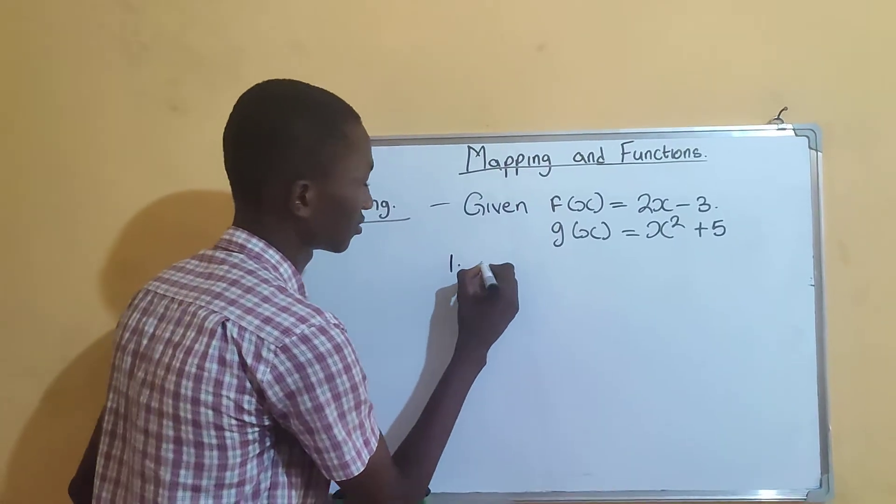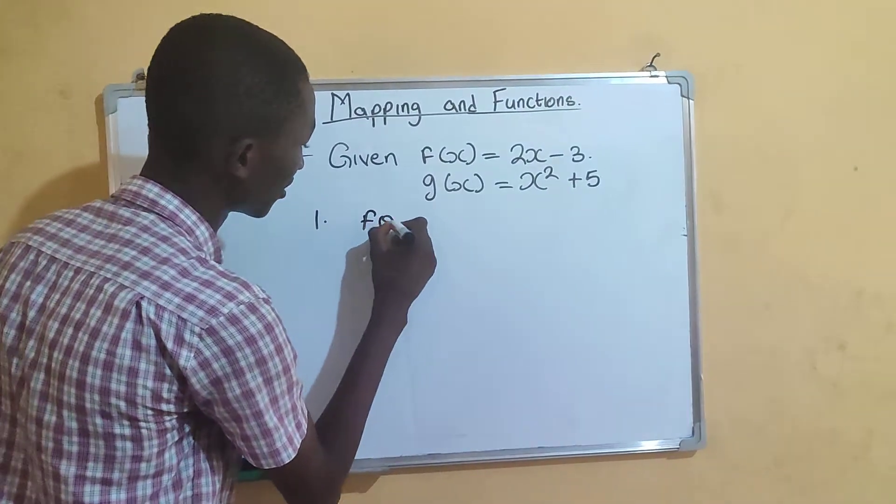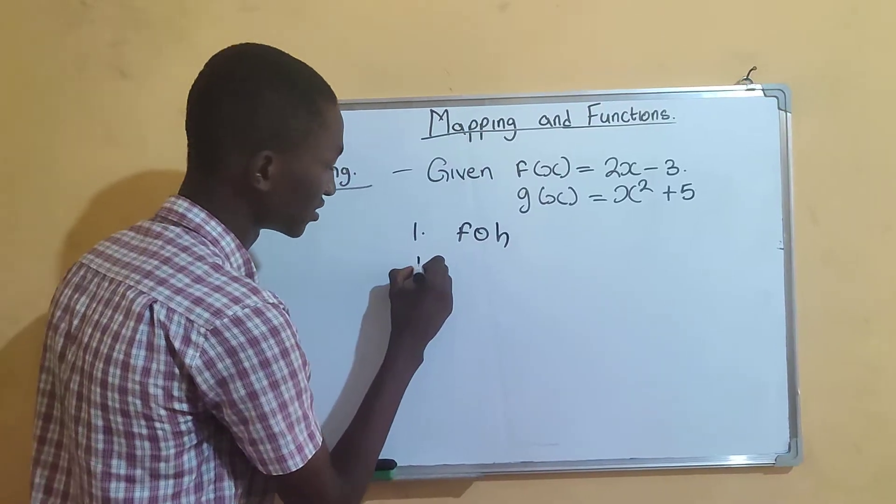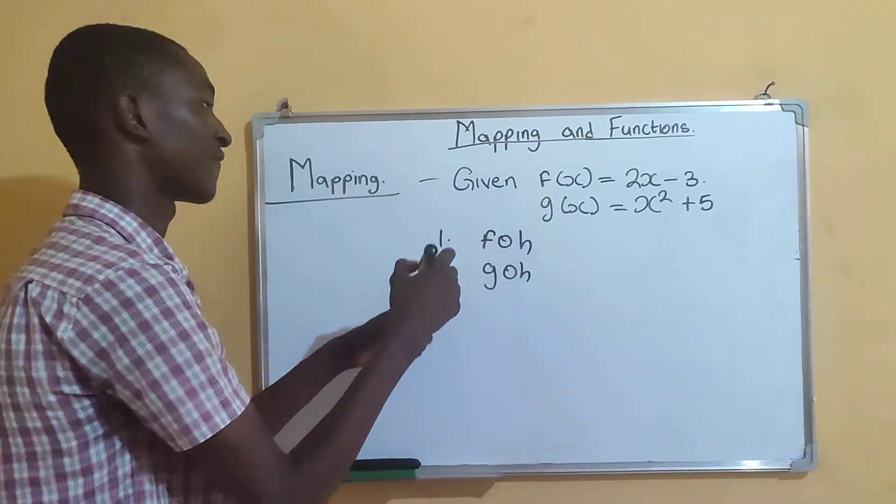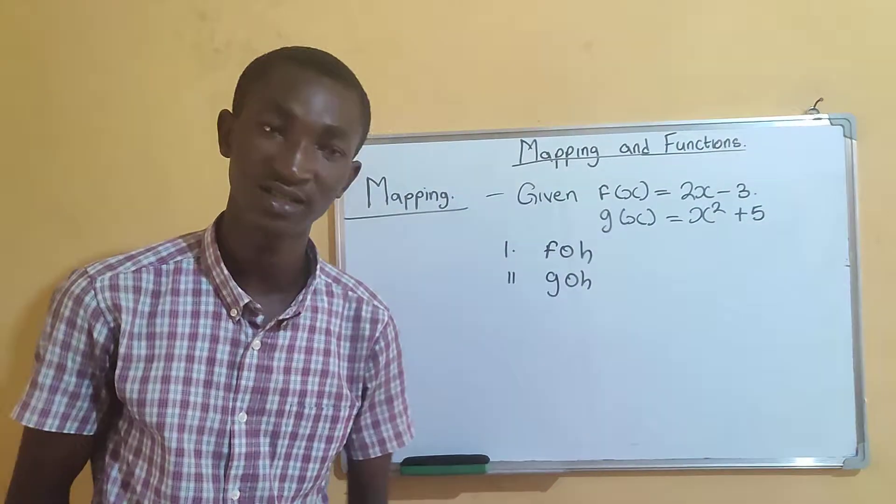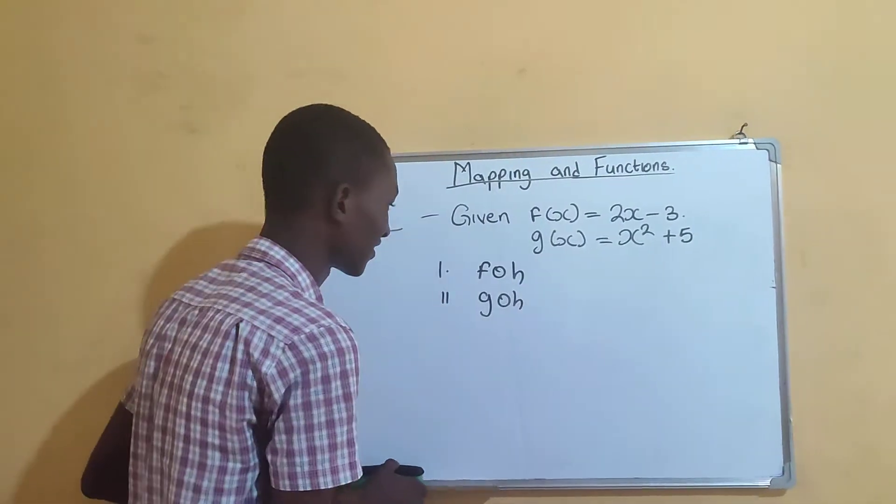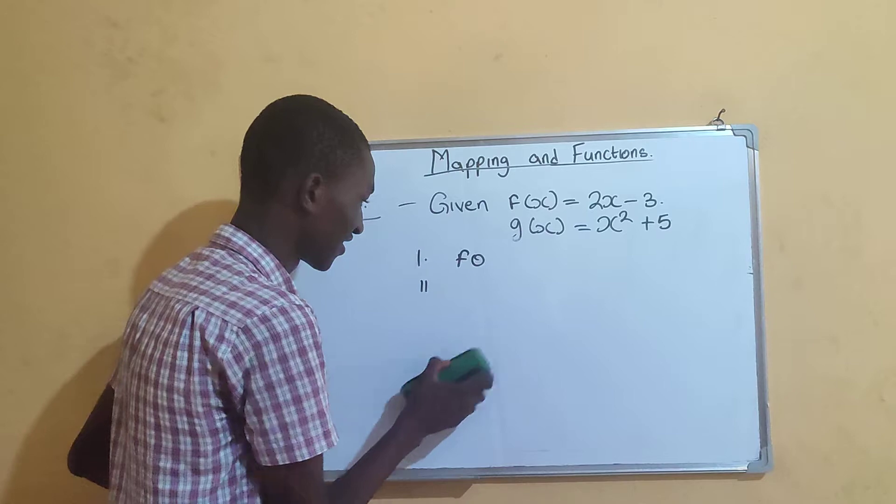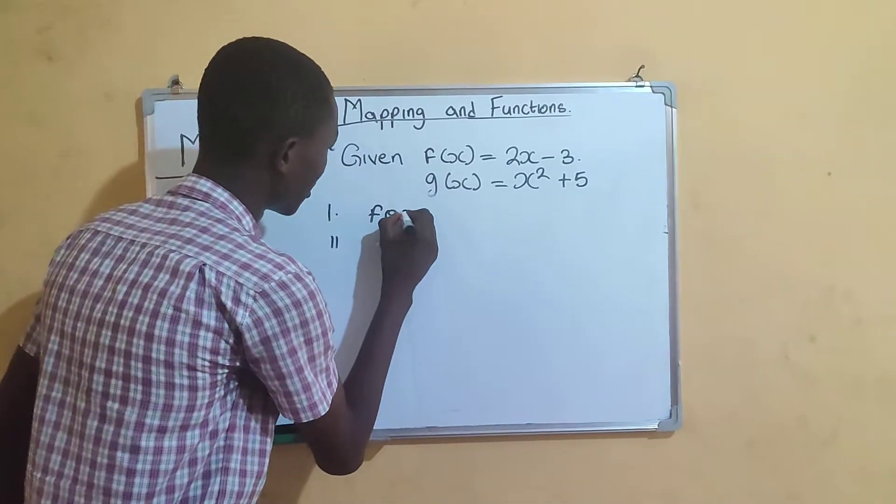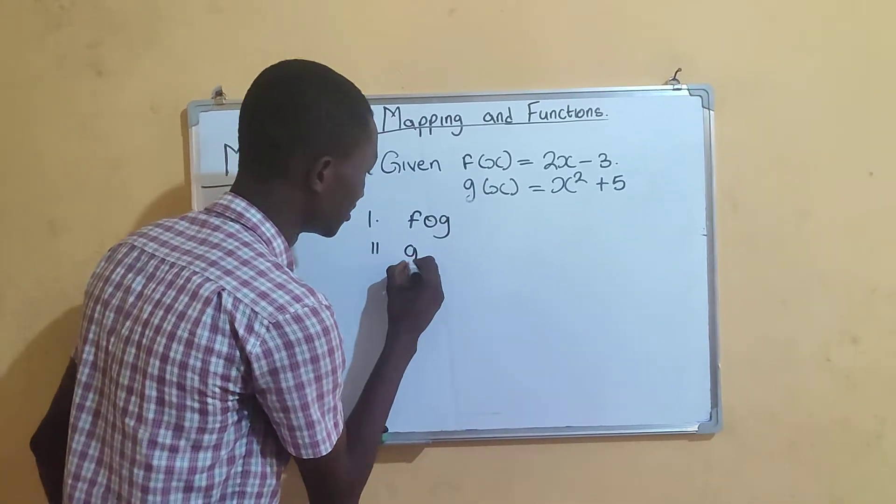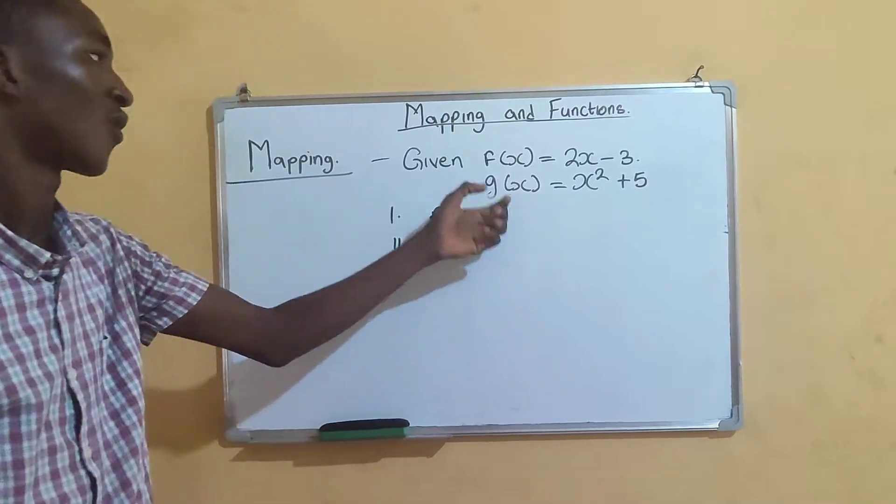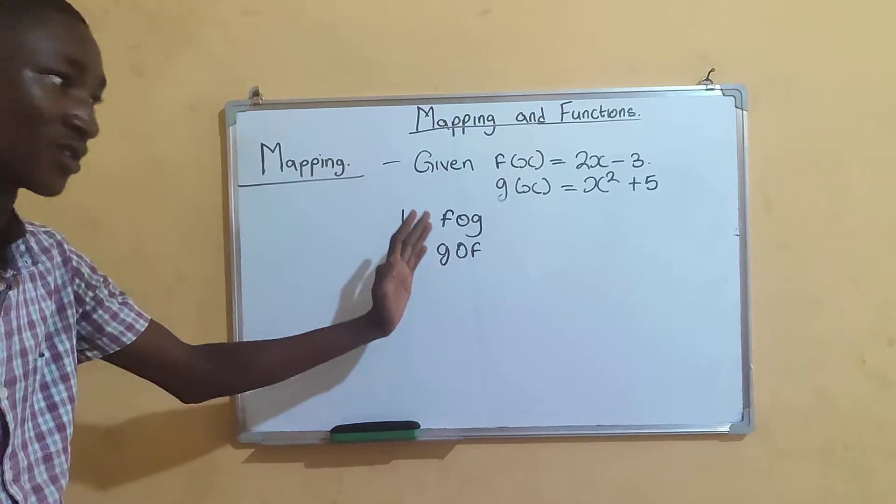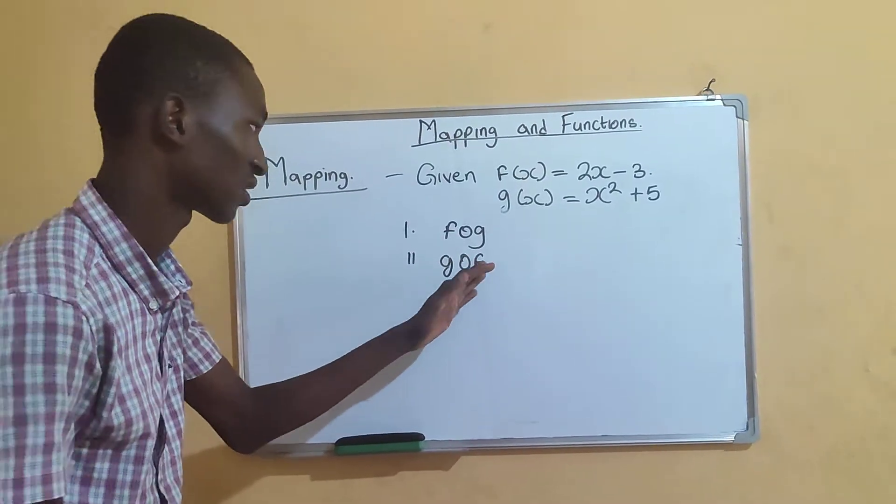The first question is find fog, then the second one is find gof. This fog means f of g - g rather f of g. Then gof means we have to put g, function g inside function f. This place we have to put function f inside function g.